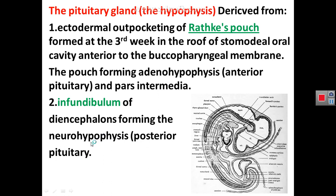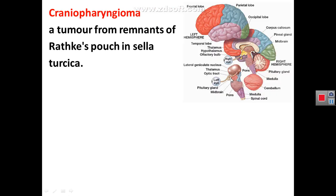The posterior pituitary, called the neurohypophysis, is derived from the infundibulum of the diencephalon. Sometimes Rathke's pouch forms a tumor because remnants of the adenohypophysis pouch fail to degenerate. If remnants of Rathke's pouch remain, they form a tumor of embryonic origin in the region of the pituitary, located in the sella turcica of the skull.